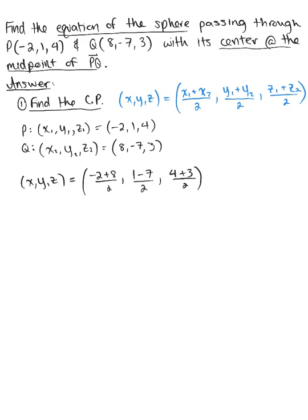We have negative 2 plus 8 gives us 6, 1 minus 7 gives us negative 6, and 4 plus 3 is 7. So our center point is 6 divided by 2 which is 3, negative 6 divided by 2 which is minus 3, and 2 does not go into 7, so we're left with 7 halves. This is our center point.